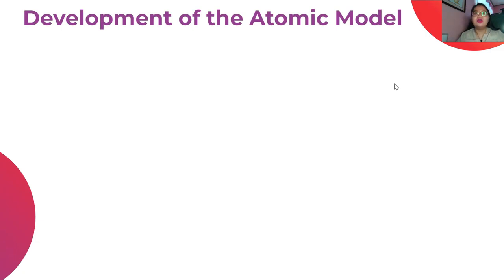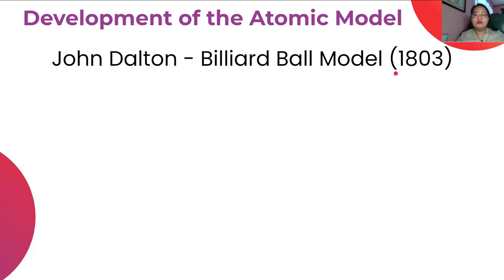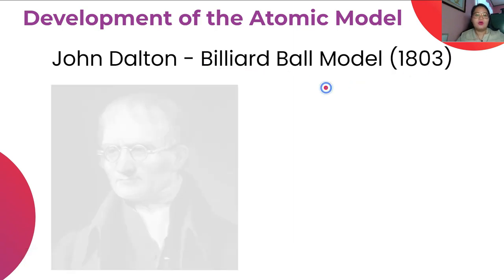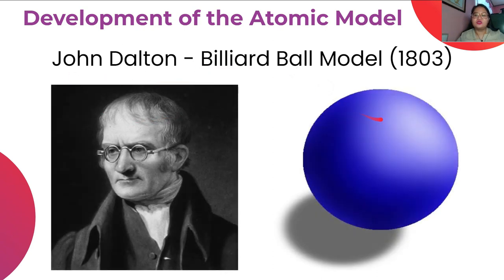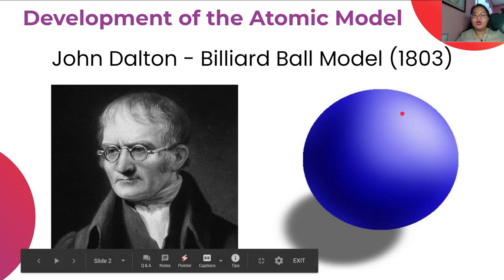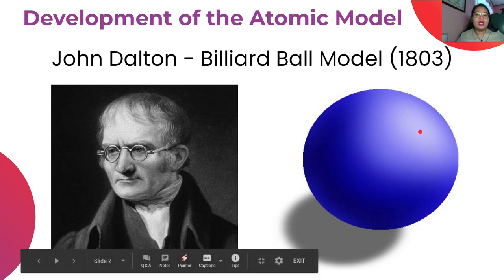What were the earlier atomic models proposed by scientists? The first one is the billiard ball model in 1803, proposed by John Dalton. In Dalton's atomic model, he said that atoms are like a billiard ball — solid, spherical in shape, and with no other parts.